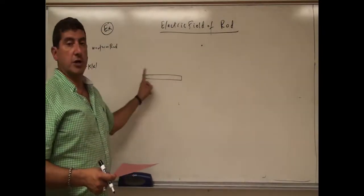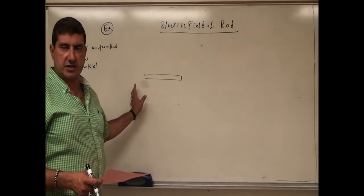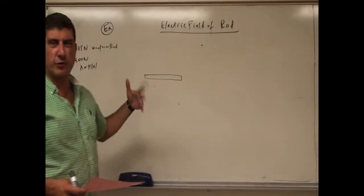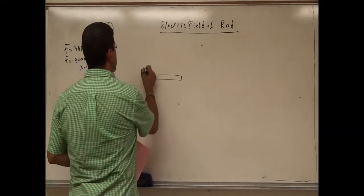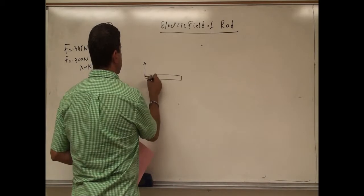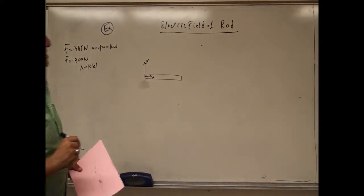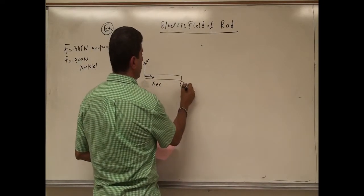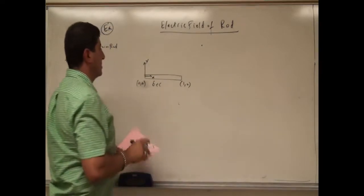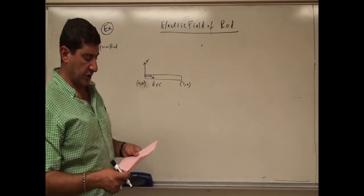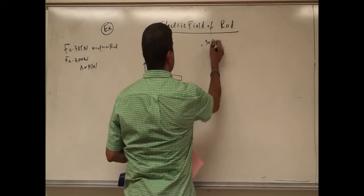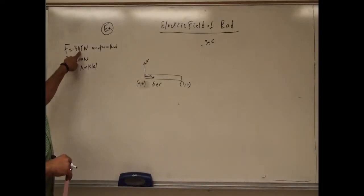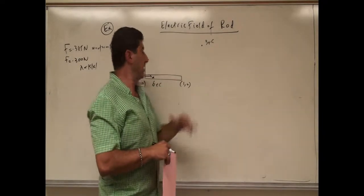For the uniform rod, I can put the origin of the x-axis anywhere I want. Since the density of the rod is the same, it's probably better to put it on the left side. So what is the electrical force of this 6-microcoulomb rod on another charge of 3 microcoulombs? The answer should be less than 0.345 and it should be at an angle. So how do we do that?